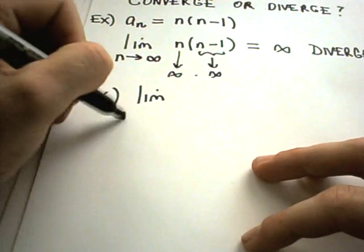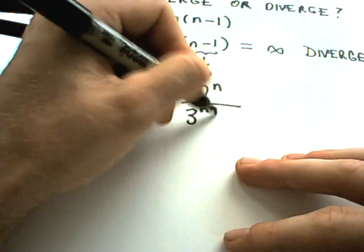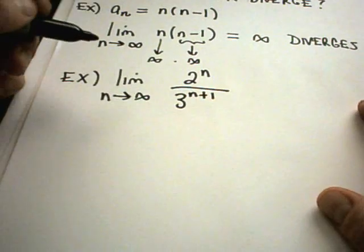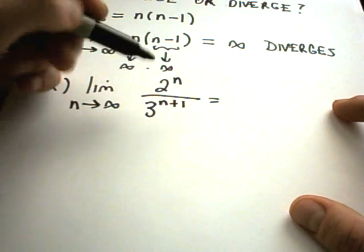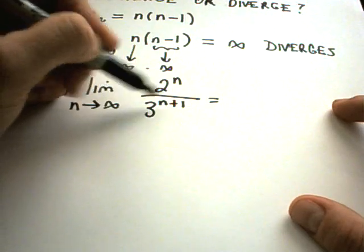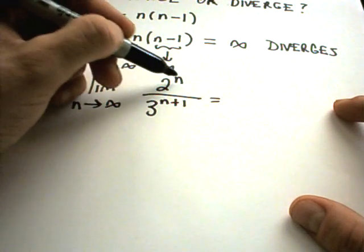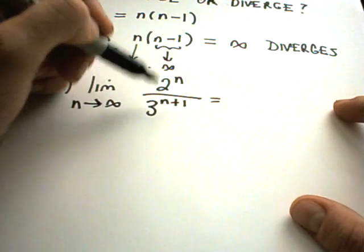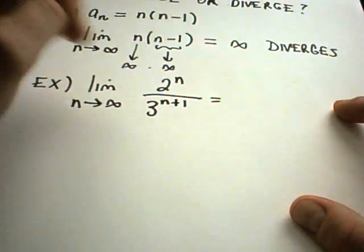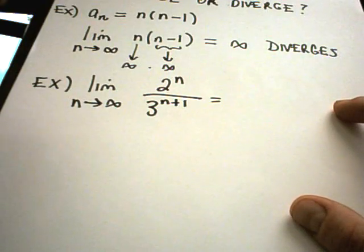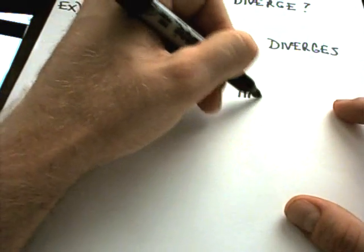Next example: the limit as n goes to infinity of 2^n over 3^(n+1). Intuitively, 3 is bigger than 2, so as we raise them to powers the denominator grows much faster than the numerator, even though both go to infinity. You could use L'Hôpital's rule here since it's infinity over infinity, but instead I'm going to rewrite it.